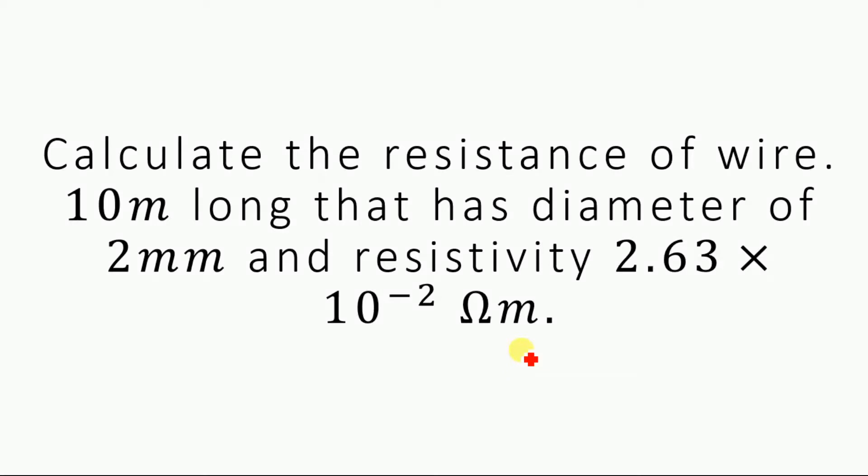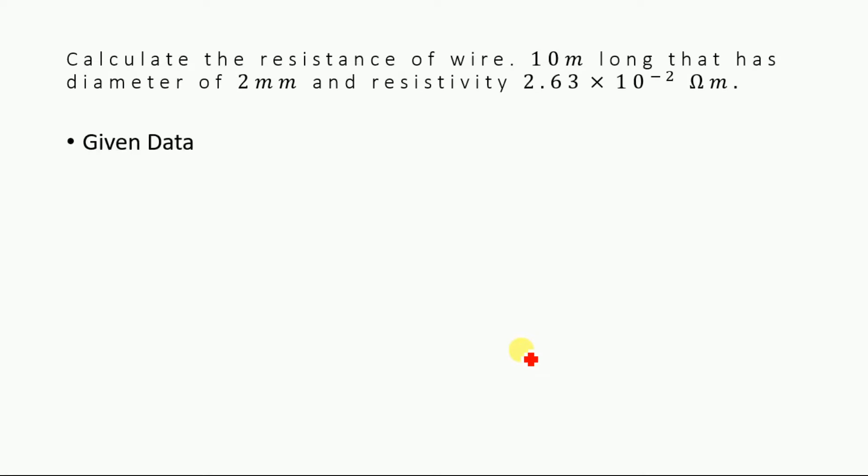Hello, today we are going to solve this numerical. We will calculate the resistance of a wire that is 10 meters long, has a diameter of 2 millimeters, and the resistivity is given as 2.63 multiplied by 10 to the power minus 2 ohm meter.